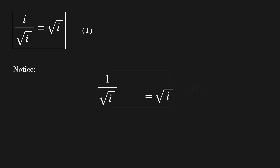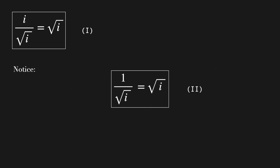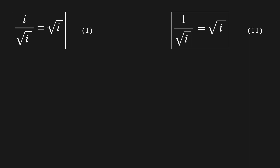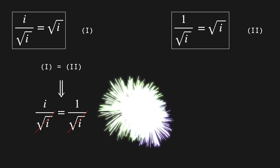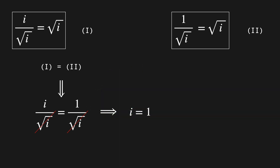Thus, we found our second equation. It turns out that these two equations are the same. So we can say that i over the square root of i equals 1 over the square root of i. But wait a second — this means that if we cancel out these two terms in the denominator, we get i equals 1. And that's it. Thanks for watching.